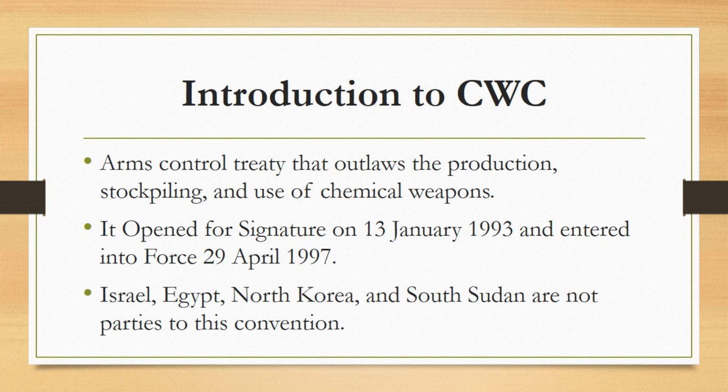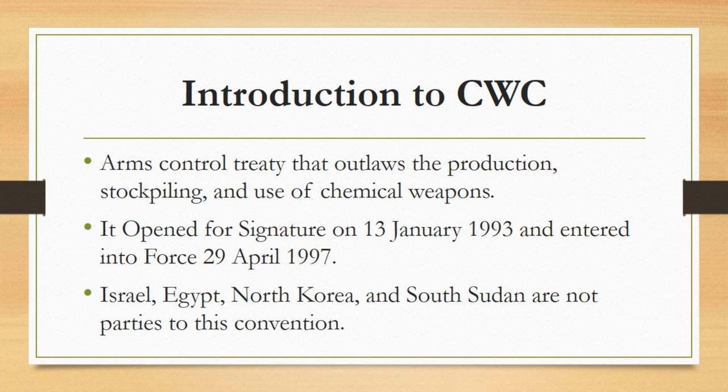States parties in turn must take the steps necessary to enforce that prohibition in respect of persons within their jurisdiction. This convention was opened for signature on 30th January 1993 and entered into force on 29th April 1997. It has 192 state parties. Four countries are not party to this convention: Israel, Egypt, North Korea, and South Sudan. Israel is a signatory but did not ratify it, whereas the other three countries neither signed nor ratified it.